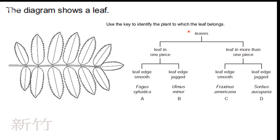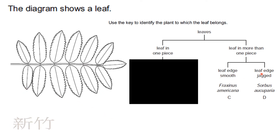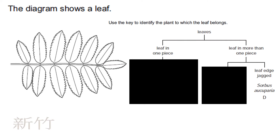The diagram shows a leaf. Use the key to identify the plant to which the leaf belongs. Is the leaf in one piece or more than one piece? Looking at this, it is more than one piece. Next, is it smooth-edged or jagged? Looking at this, it is clearly jagged, so the answer is going to be D.